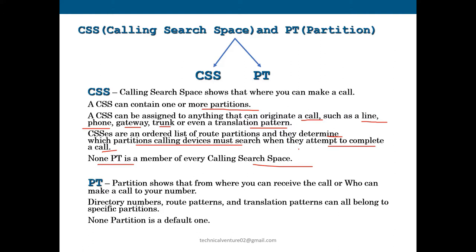The next thing is Partition (PT). CSS defines where you can make a call, while Partition defines who can make a call to your number — that is, from where you can receive a call. Partition is configured on directory numbers, route patterns, and translation patterns. All of these belong to specific partitions, and None partition is the default one. I will show this in the lab when I create the CSS and partitions.